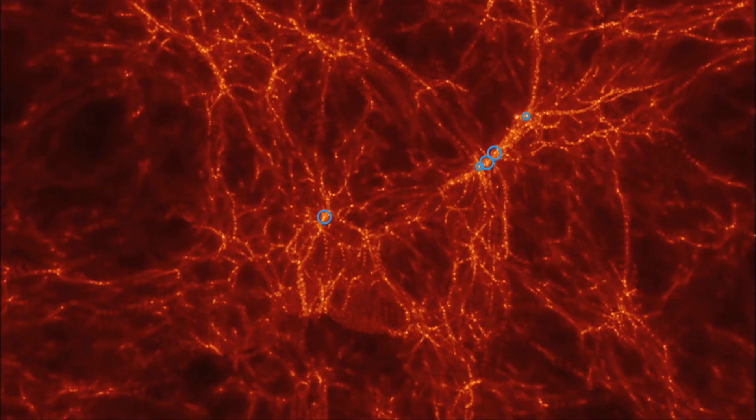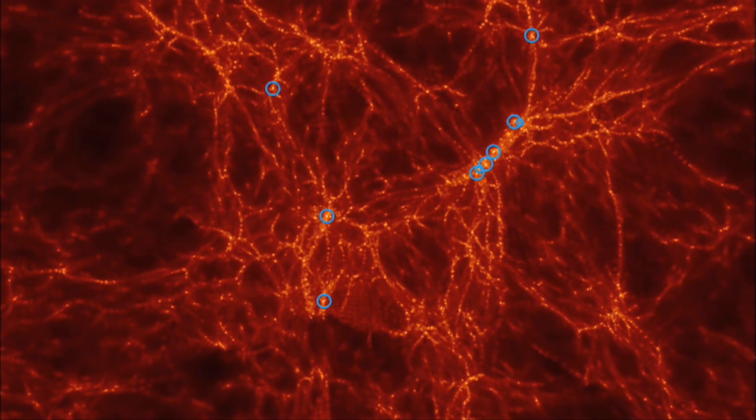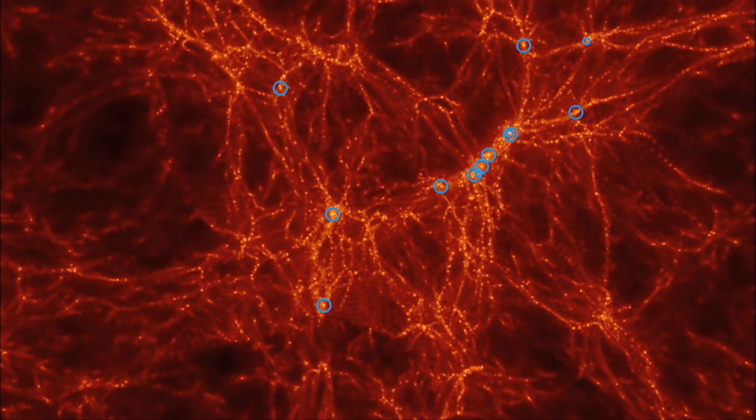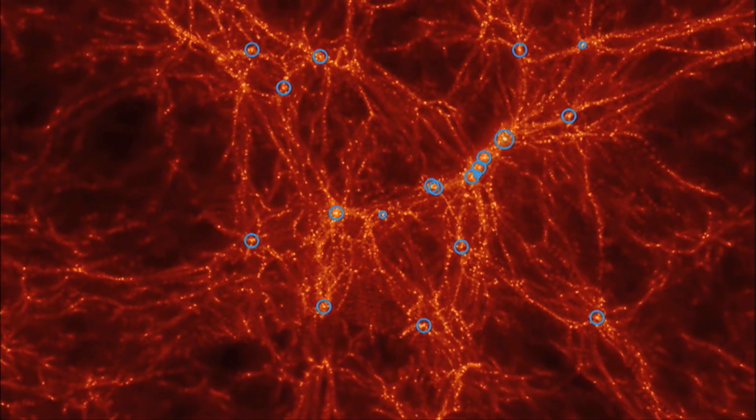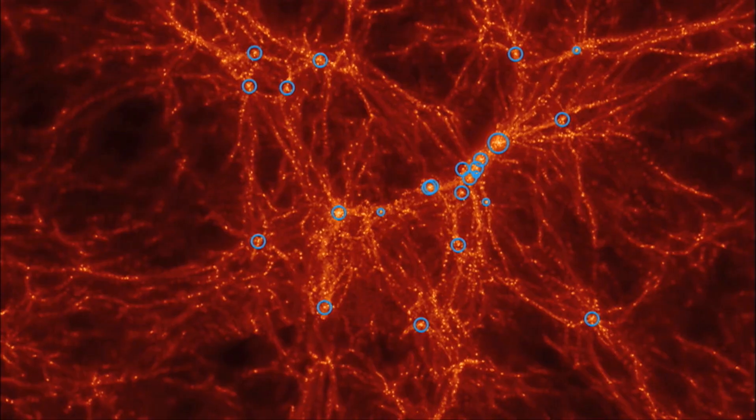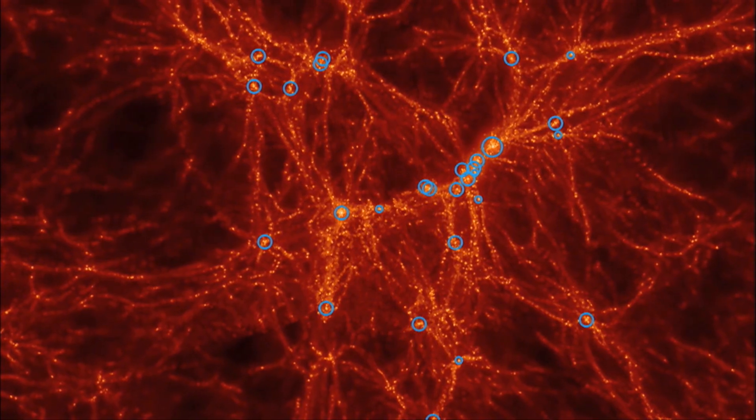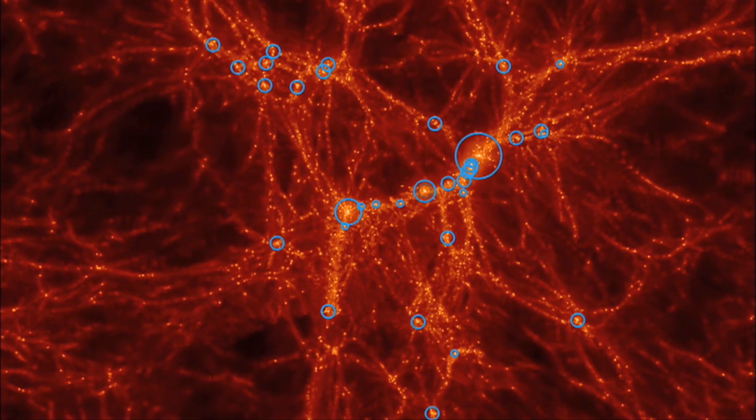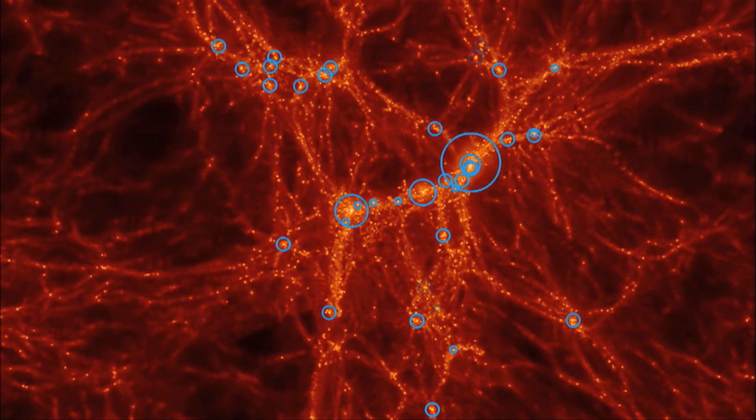In this sequence drawn from her simulation, the circles indicate the appearance of black holes within the data. What she finds is that as these black holes gain mass, gravity pulls them toward the densest regions, where a few grow larger than all the rest.